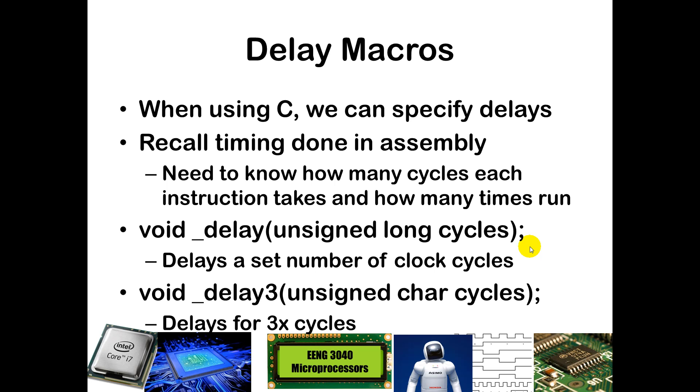If you wanted to do this, you could do underscore delay3. Notice that this takes a char type. Remember char is just one byte. So with it being an unsigned char, it's from 0 to 255. This delays for three times however many cycles you put in there. So this can delay from 0 up through 3 times 255. So that doesn't delay as long as the delay up here. But for small values, you may want to use delay3.